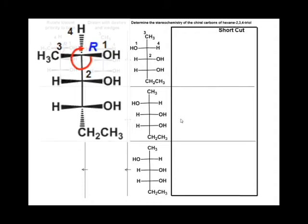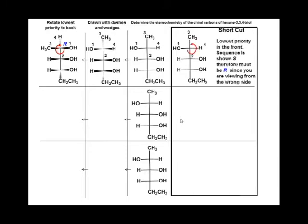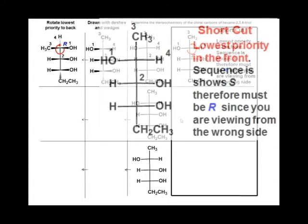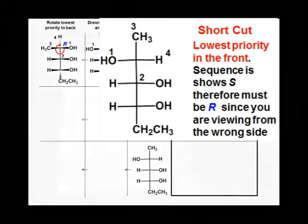Could we have figured this out just looking at the Fisher projection? Of course we could. Shortcut: prioritize like normal. The sequence is anti-clockwise, but the lowest priority is in the front. Thus, if you were looking from the other side of the molecule, it would have a clockwise, or R configuration.